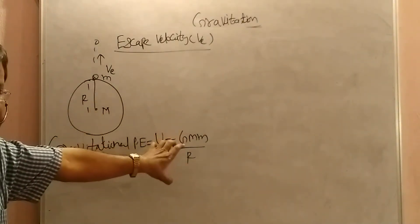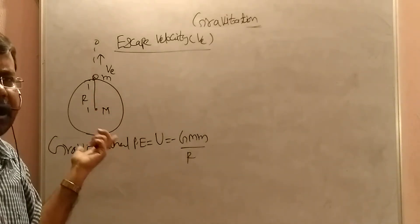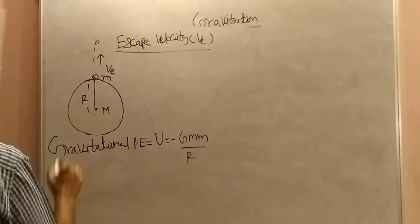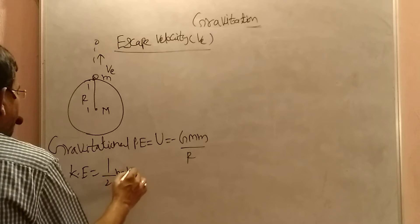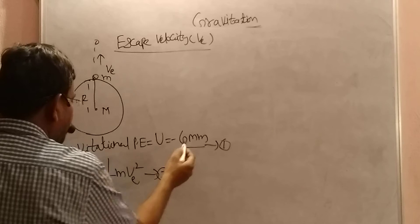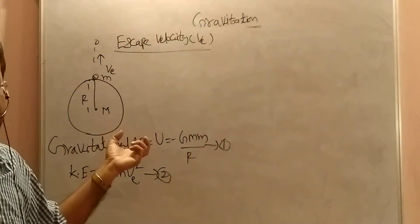How much potential energy it is having, equal to or slightly more than or more than? Kinetic energy if you give, it escapes. Now, how much energy we are giving? Kinetic energy, that is half m v_e square, where e is escaping velocity. So this potential energy, kinetic energy. So this kinetic energy is slightly more than, simultaneously equal. Then only it escapes.